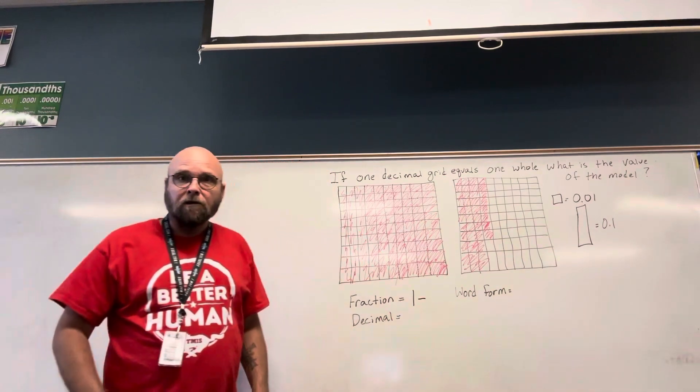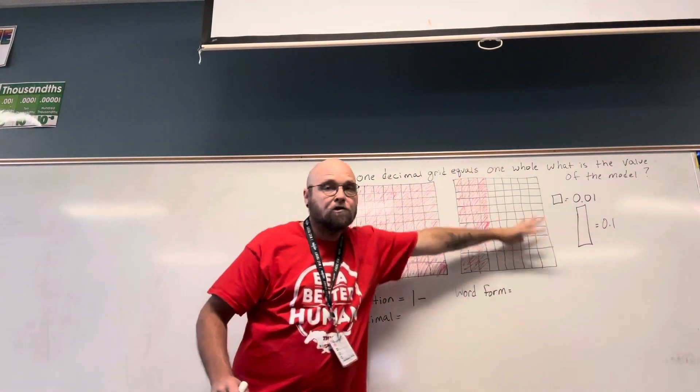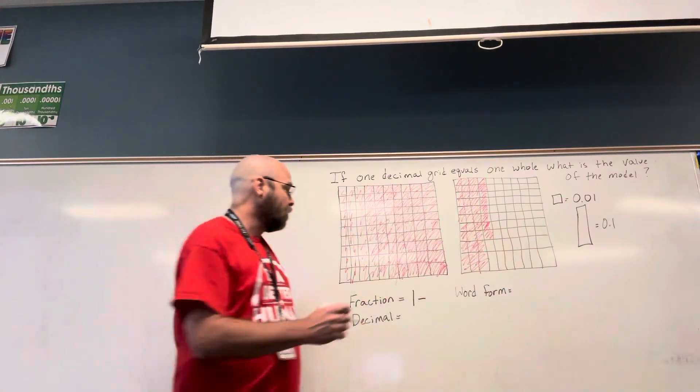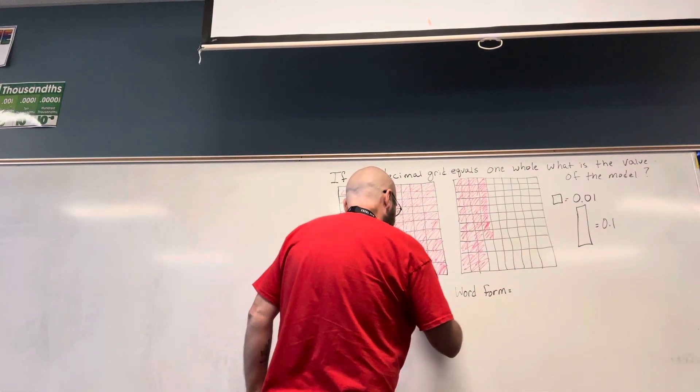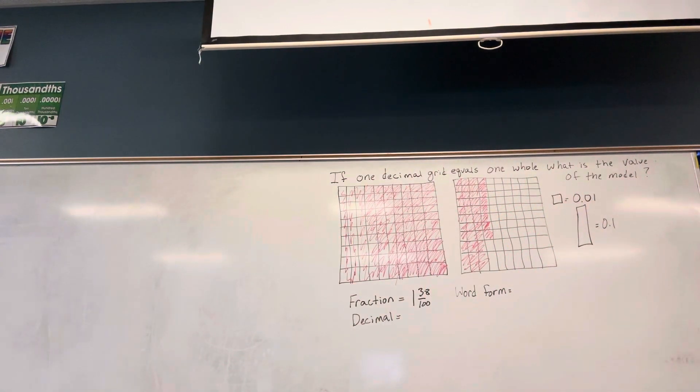Now, I'm going to have a fraction. As my fraction on this grid, how many are shaded in? Thirty-eight hundredths. Out of how many? A hundred. Thirty-eight out of a hundred. One and thirty-eight hundredths.